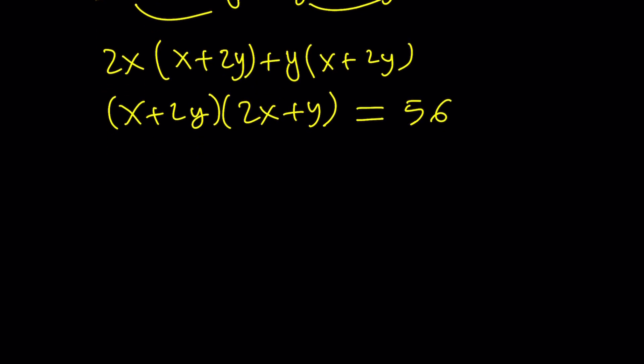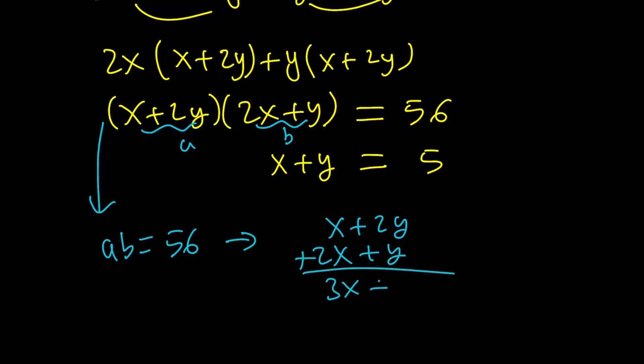Now, being able to factor this is a good thing, but we now have a system. To solve it, we're going to use a really cool trick. I'm going to call this a, and I'm going to call that b. So that implies ab equals 56. But this gives us another good thing. If I add a and b, I get from symmetry 3x + 3y.